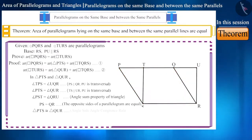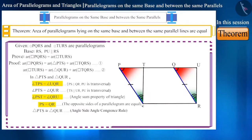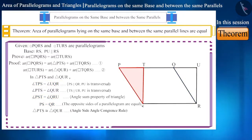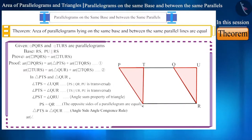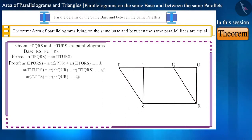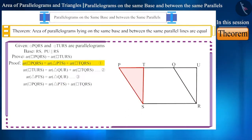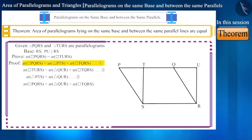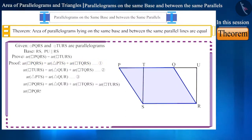Therefore, both triangles are congruent by the Angle-Side-Angle (ASA) congruence rule. Triangle PTS is congruent to triangle QUR, and the area of congruent triangles is equal, so ar(PTS) = ar(QUR). Now in equation 1, if we place triangle QUR instead of triangle PTS and join the two areas on the right, we get the area of TURS. Therefore, area of PQRS equals area of TURS.